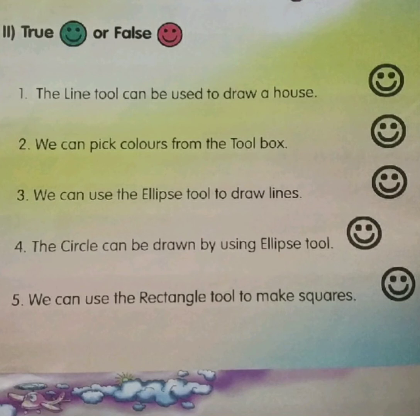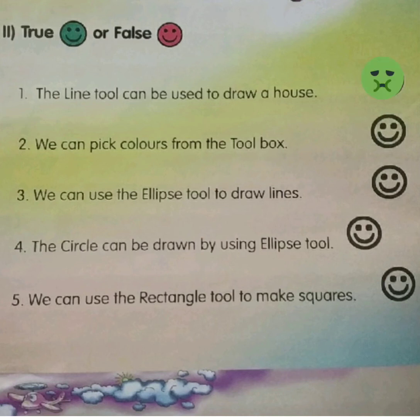The next section is true or false. For a true statement we have to color with green; for a false statement we have to color with red. First statement: the line tool can be used to draw a house. That is true, so color with green.